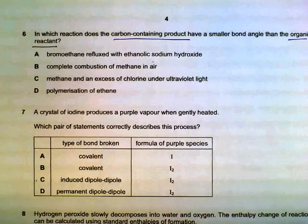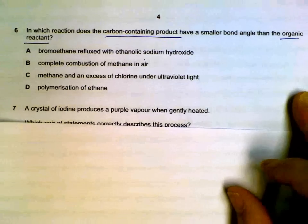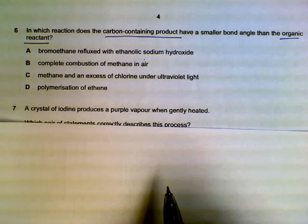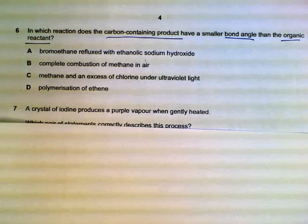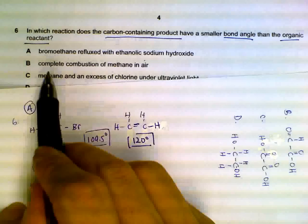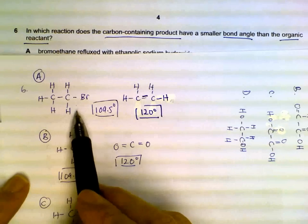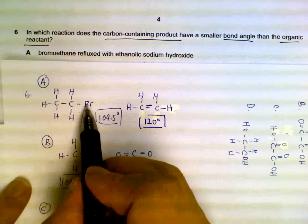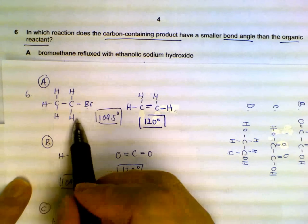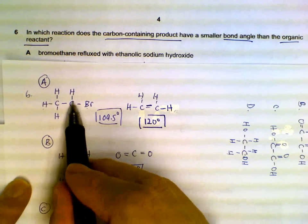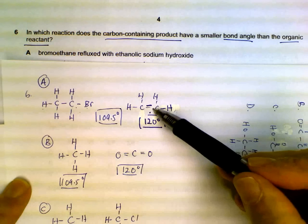Number six, comparing the products of the reaction compared to the organic reactant in the beginning, what angle do they have? I'll show you the results that we have. For bromoethane and ethanolic sodium hydroxide, this is the beginning. Ethanolic sodium hydroxide will remove bromine and hydrogen - you eliminate it and form a double bond. So at the start this is 109.5 degrees tetrahedral, and then we have our alkene which is 120 degrees.